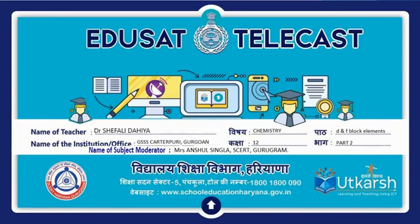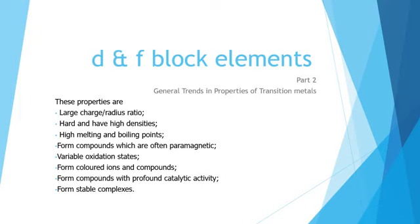Good morning students. My name is Dr. Shifali Daiya and today we will do Class 12 Chemistry D and F Block Elements Part 2. Our subject mentor is Mrs. Anshul Singla from SCRT Gurkha. The topic D and F Block Elements Part 2 will include general trends in properties of transition metals — charge by radius ratio, their densities, melting and boiling points, their magnetic nature, oxidation states, their colored compounds, their catalytic activity, and the formation of stable complexes.